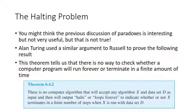These paradoxes are actually quite useful. Alan Turing, the pioneer of computer science, used a similar argument to Russell's to prove theorem 6.4.2: the Halting Problem. There is no computer algorithm that can input any other algorithm and any data set and determine whether that algorithm will run forever or terminate in a finite amount of time. Obviously you can run a program and see what happens, but you can't run it forever. This is a genuinely useful result in theoretical computer science.